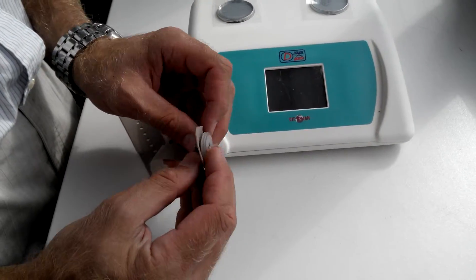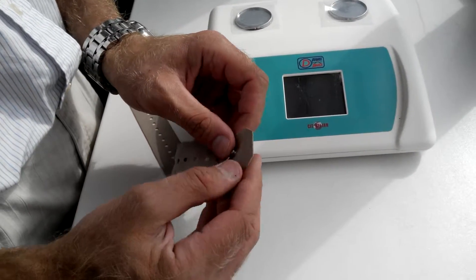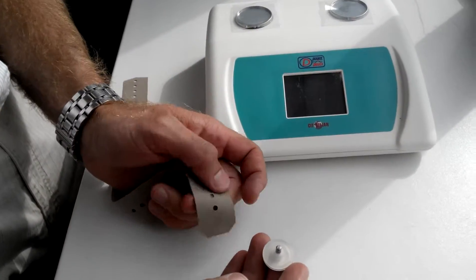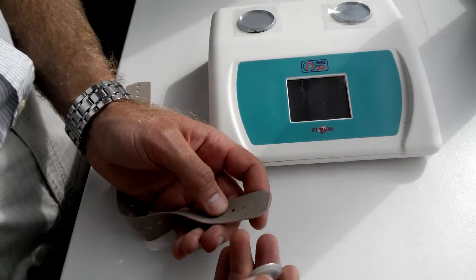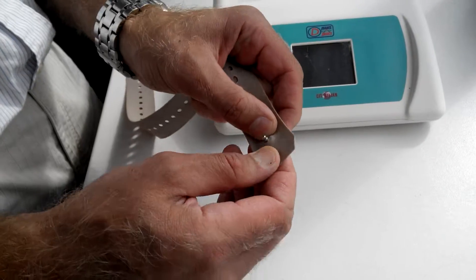These electrodes are more available than the old ones, and so we can use them. We apply the electrode to the finger, put it on the finger.